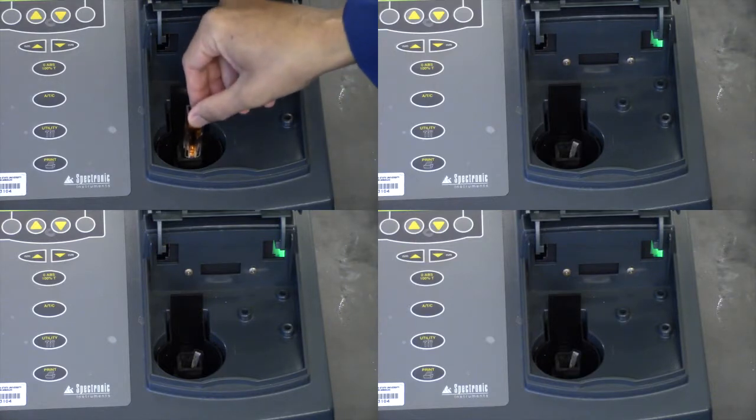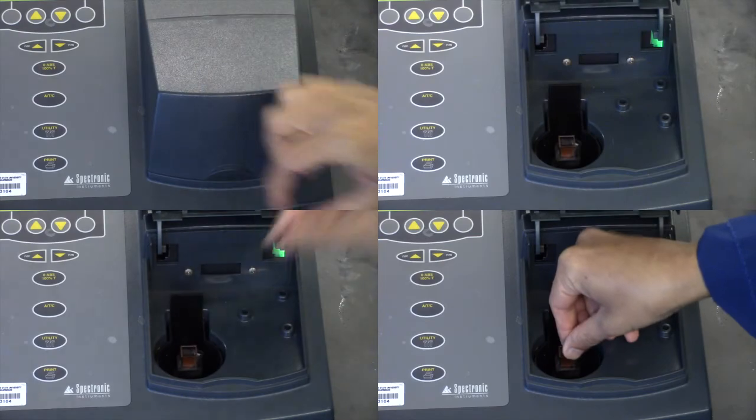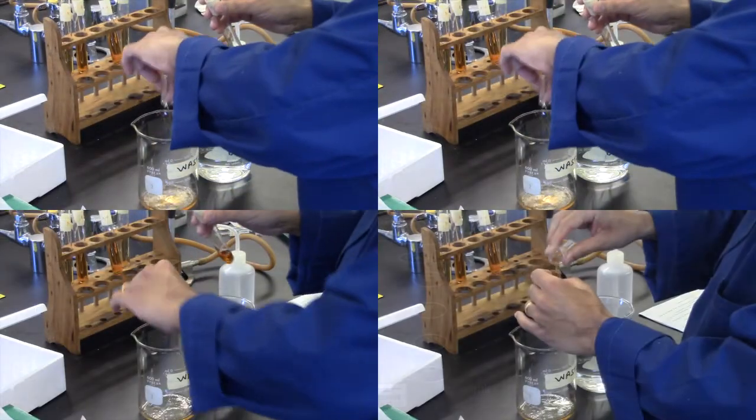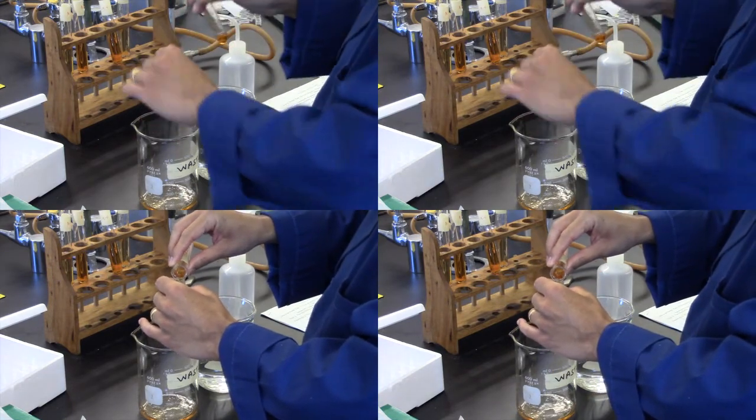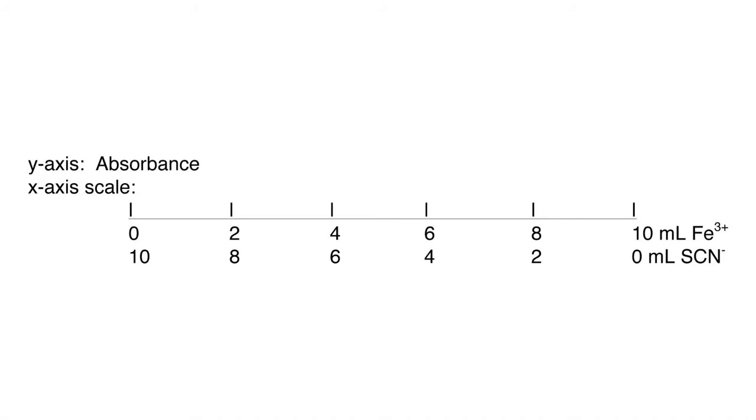Now measure the absorbance of solutions A1, A2, A4, and A5 and record the measurements. Remember you must rinse each cuvette three times with the sample that will be used in it. These absorbance values will be plotted against the milliliters of reactants.